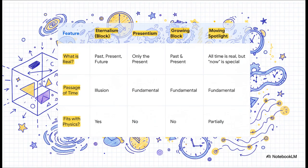As you can see, right there in the last row, eternalism, our block universe, is the only one that lines up perfectly with modern physics. The others try to save our intuition, but they do it by fighting our best-tested science.